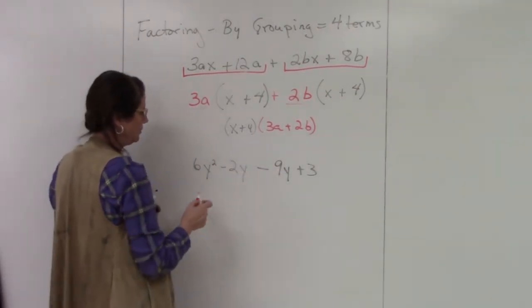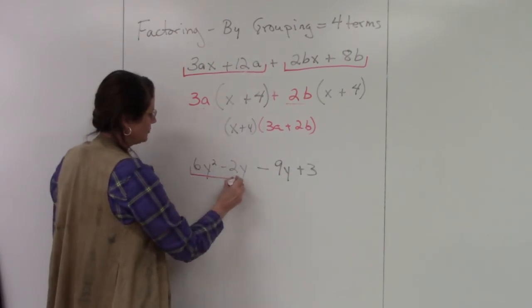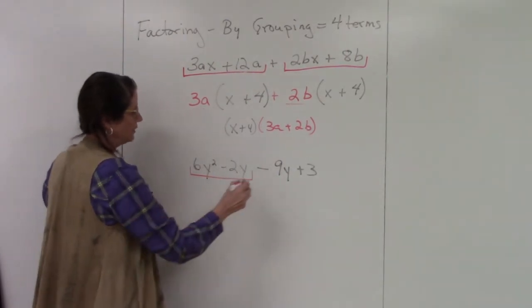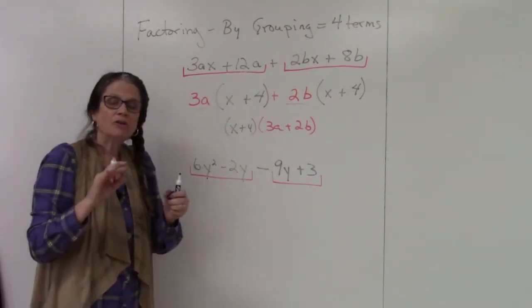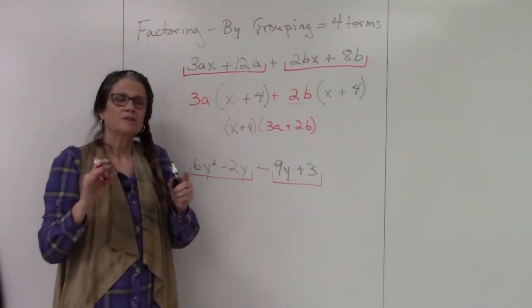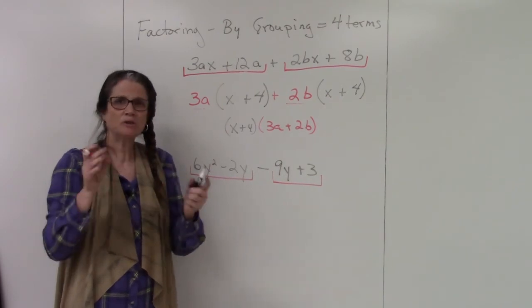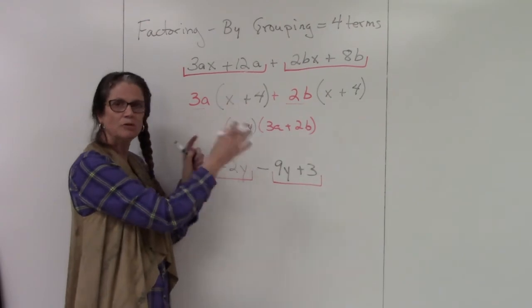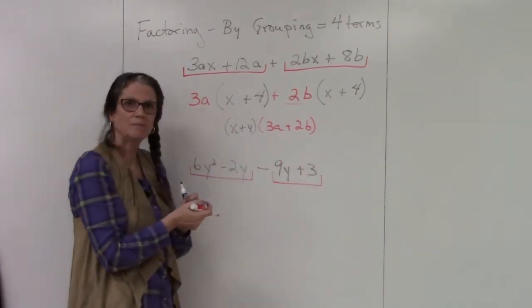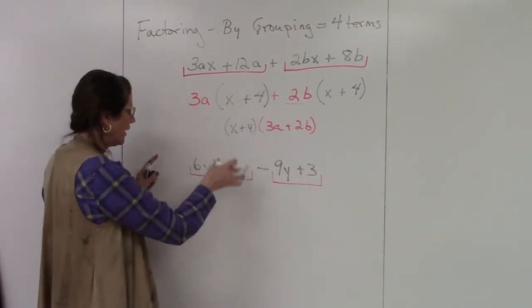Here's another example. I have four terms, so I know I'm going to factor by grouping. I'm going to group the first two and the second two. Now, if there's ever something that doesn't have enough in common, you can switch them around—just make sure you bring the sign with it. You can move them as much as you want, as long as you keep the sign in front.